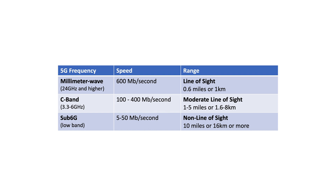In the table, line of sight means that there needs to be a direct line from the access point to the user mobile device — there cannot be a building, tree, or other obstruction between them. For millimeter wave frequencies, there must be a clear line of sight from the user to the access point. However, for the low band, the wireless signals can actually pass through walls and go through many other types of obstructions. C-Band is not as good as the low band at overcoming obstructions, but it's better than the millimeter wave bands, which cannot tolerate obstructions at all.